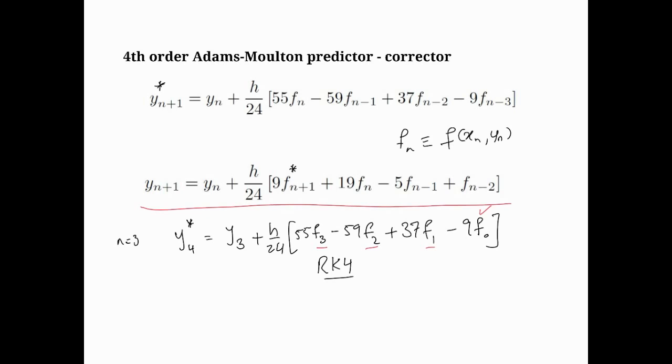Remember, these work in tandem. yn plus 1 star first, then yn plus 1, yn plus 1 star, yn plus 1, and so on. In other words, the next one would be we calculate y4, then that's the corrected y4, then we go for y5 star, then we'll go for the corrected y5, and so on. And this way, this is how the Adams-Moulton predictor corrector fourth order works. Thank you.